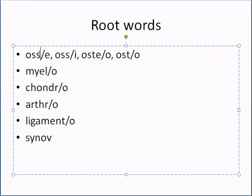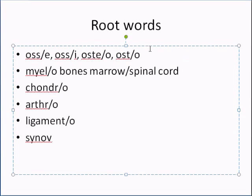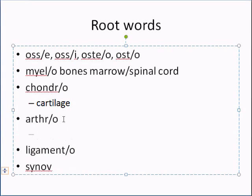These are some of the skeletal terms you're going to encounter, and they all mean the same thing — they all stand for bone. Os, osi, osteo — depends on what you're trying to say. Myelo refers to bone marrow and spinal cord. Chondra refers to cartilage. Arthro refers to joints. Ligament, and synov refers to the synovial fluid found in your bones.